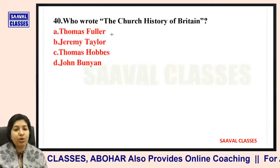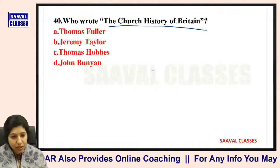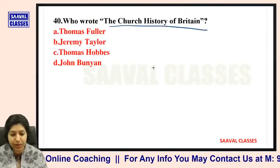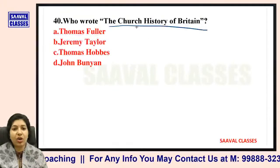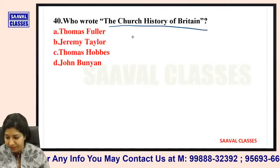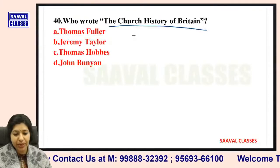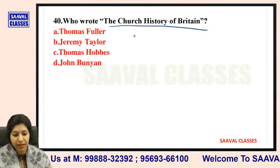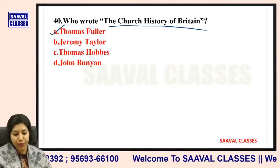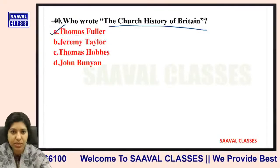Question number forty — the last question for today: Who wrote The Church History of Britain? Thomas Fuller, Jeremy Taylor, Thomas Hobbes, or John Bunyan? The Church History of Britain is written by Thomas Fuller.